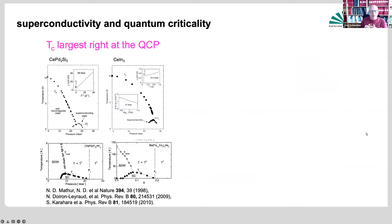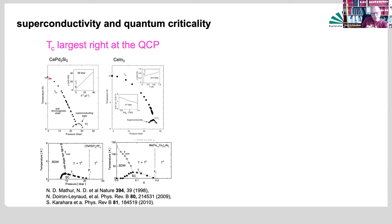What motivated us is a problem that has bothered me for quite some time. I'm a condensed matter theorist, and I try to understand specific materials. We see a number of materials — I deliberately don't even want to talk about the cuprates because they have so many additional complications. But these are so-called heavy fermion systems: cerium palladium-2-silicon-2 and cerium indium-3. They undergo a magnetic transition, and by pressurizing the material you suppress the magnetic order. At the foot of the disappearance of this ordered state at the quantum critical point, you get superconductivity.